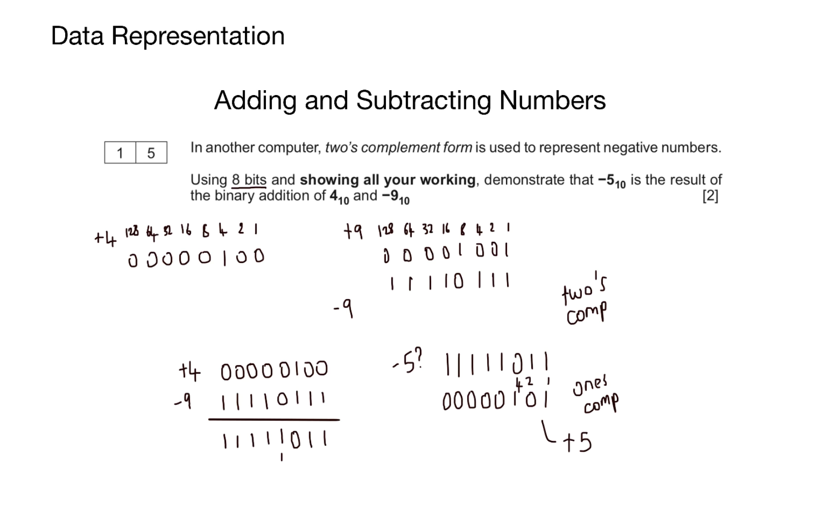That's everything that we need to cover for binary addition and subtraction. Hopefully, you can take away from this, and now you understand how adding binary and subtracting binary is a fairly simple process. In the next video, we're going to talk about floating point numbers. Students often struggle with floating point numbers, and it's the hardest one to grasp out of everything we've done so far. But hopefully, we'll make it quite simple.